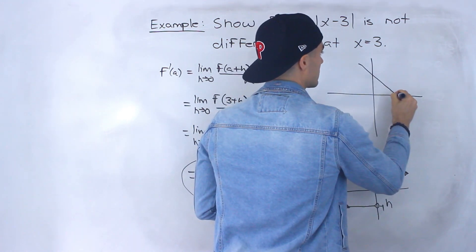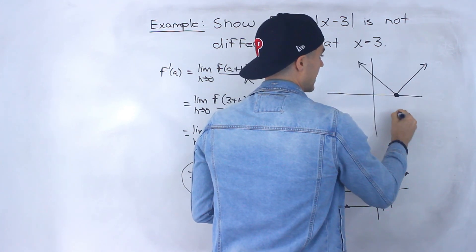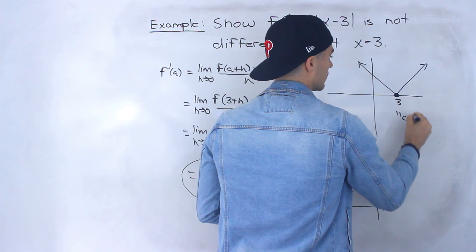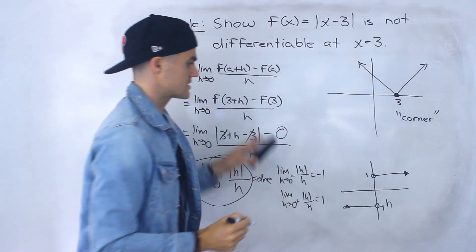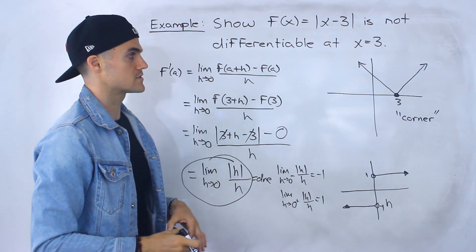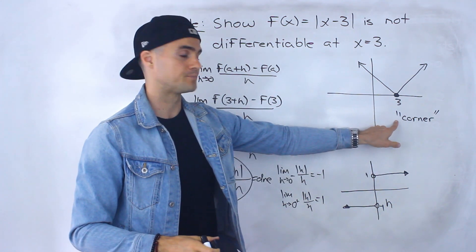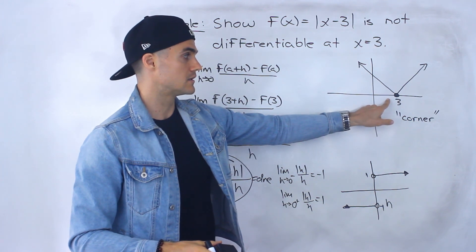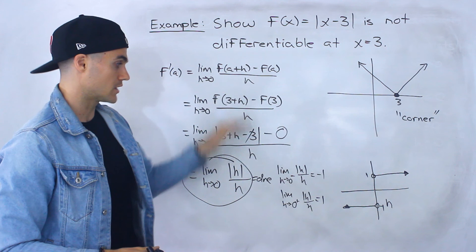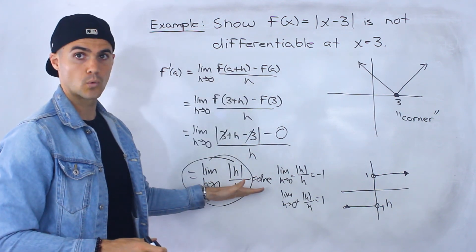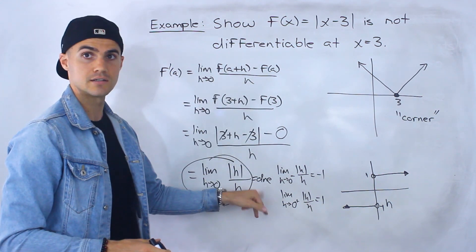Bringing back the graph of the original function, this is a case of a corner. Whenever you have a function with a corner like this, it's not going to be differentiable at that x value. You have to show it with the difference quotient, demonstrating that the limit does not exist.